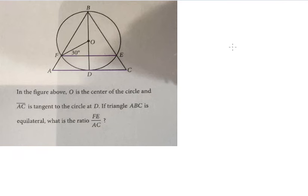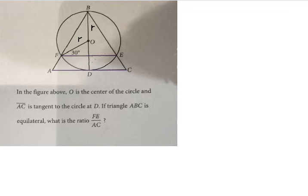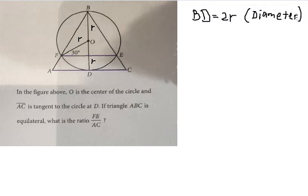Hello everybody. Today I want to talk about geometry. The topic is about finding the ratio FE over AC. Let's say F is about the radius of the circle — I will call it R. The next one, OB and OD are also the radius of the circle. So in this situation, BD equals to 2R because this is about the diameter.